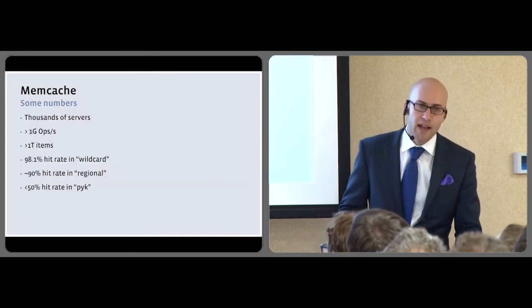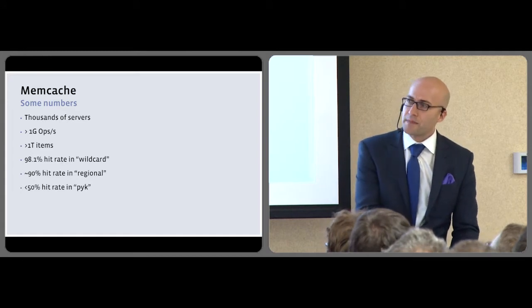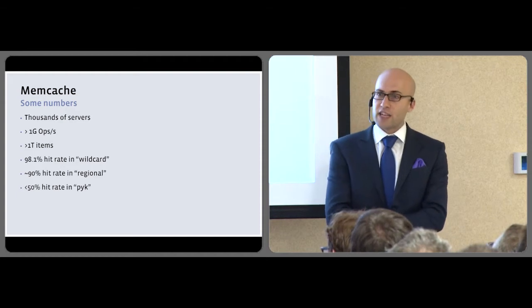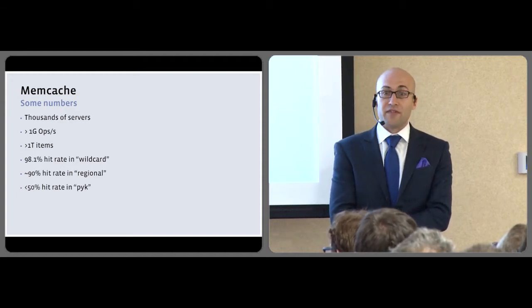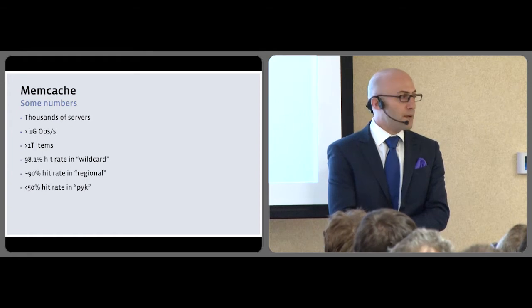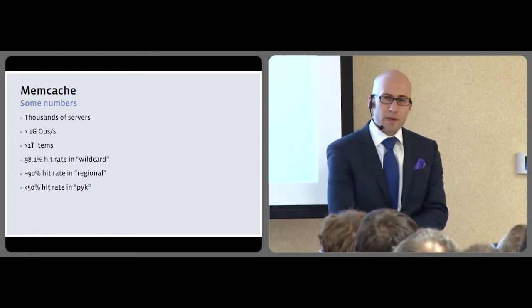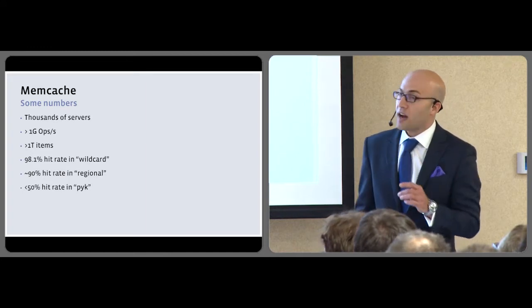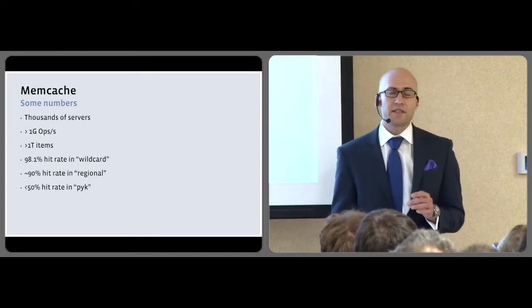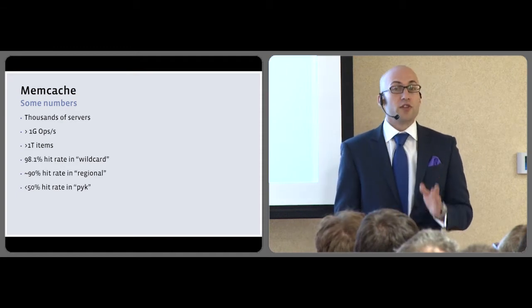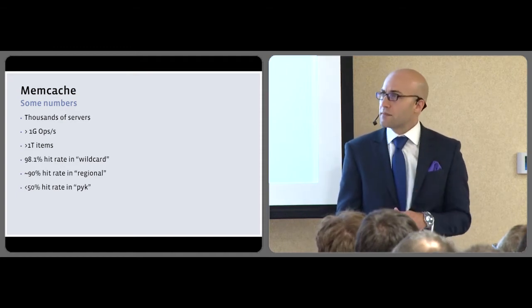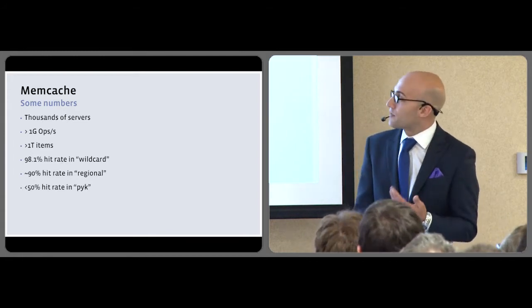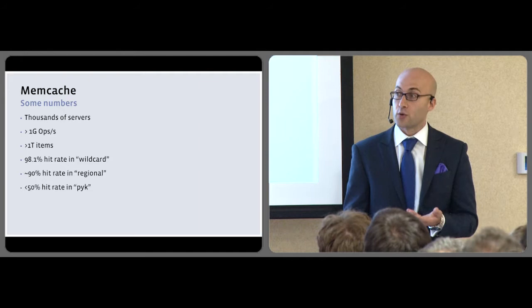In terms of numbers, we're talking about thousands of servers. Our Memcache deployment answers over a billion cache operations per second. We have over a trillion key value associations. And we segment the memory space into multiple pools. I want to highlight that the vast majority of the data that we need to run the site comes straight from memory. We still need MySQL, but mostly as a persistent storage, not as a source of the live data.